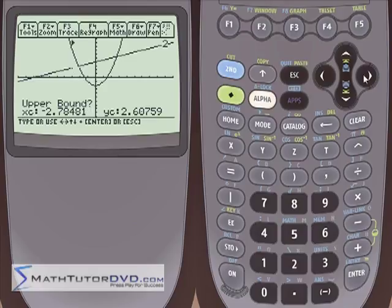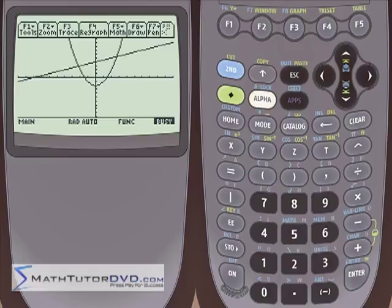Now it's asking for the upper bound. Go on the other side of the intersection point. When you do that, it thinks for a second.